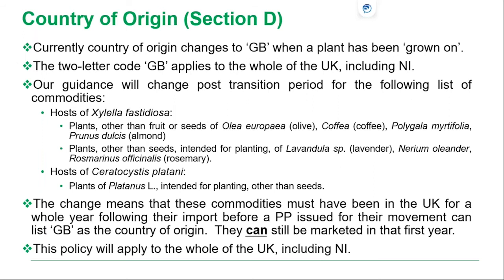For country of origin, once the plants have been grown on and meet certain conditions — such as being repotted, replanted, and grown under protection or outdoors for a certain period of time — you can designate your goods as GB origin. There are notable exceptions for Xylella and plane wilt: if you bring those goods in, they must be in the UK for a whole year before you can list them as GB origin. You can still market them within that year, but you cannot state GB origin on the plant passport. This policy applies across the whole UK including Northern Ireland.